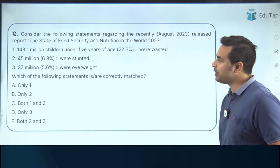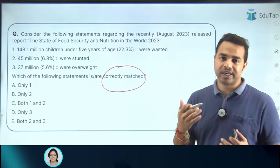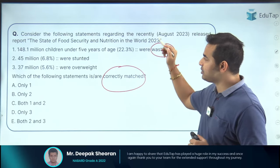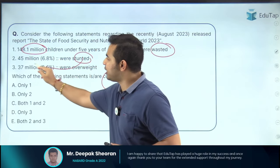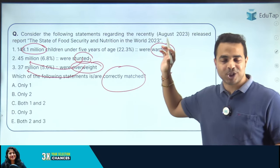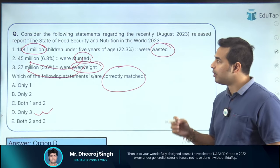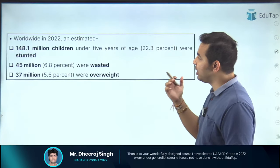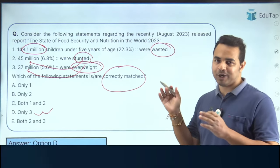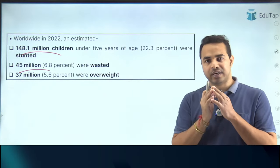Another similar question asks you to identify correctly matched statements related to children's overweight, wasting, and stunting. The value for stunting is 148.1 million and for wasting is 45 million. Once again, values were interchanged to make statements incorrect. You must be very careful and read statements carefully in the exam when attempting such questions.